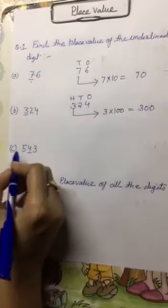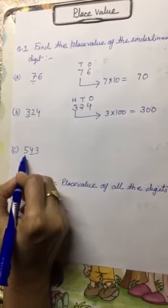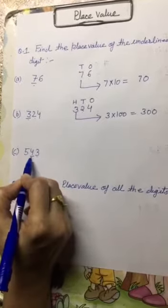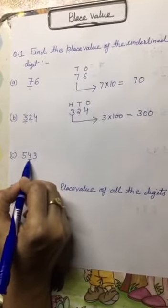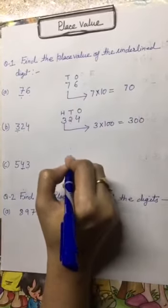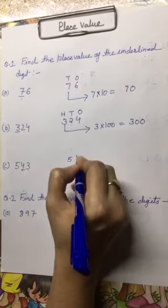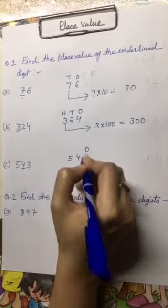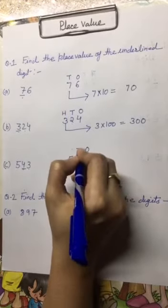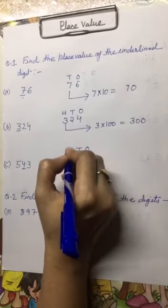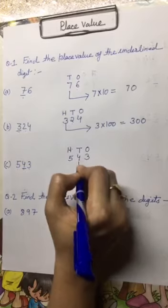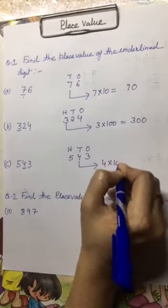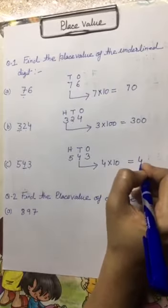Question number C. The number is 543 and we have to find out the place value of number 4. We will write down the position of each number. Number 3 is in 1's place, number 4 is in 10's place, and number 5 is in 100's place. So the place value of number 4 is 4 into 10, which is 40.